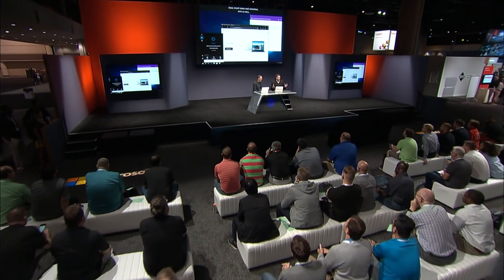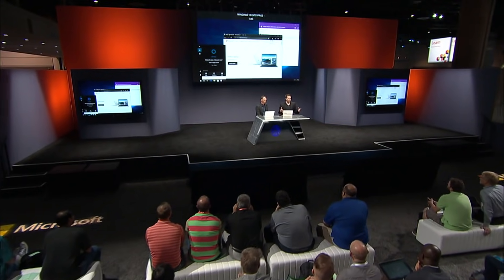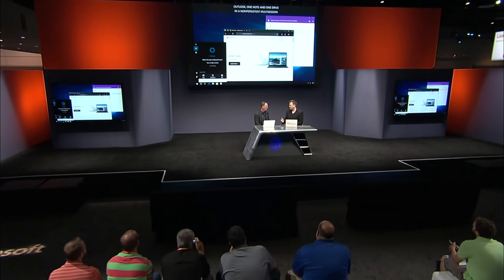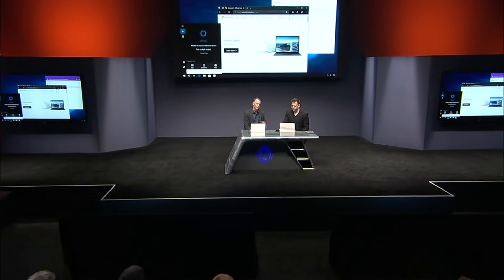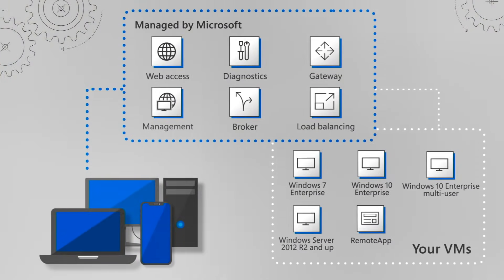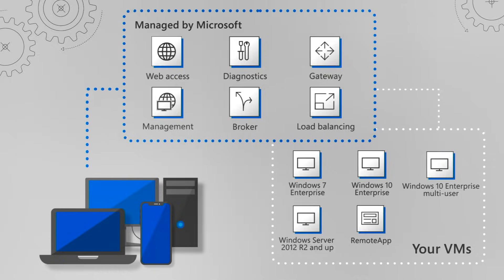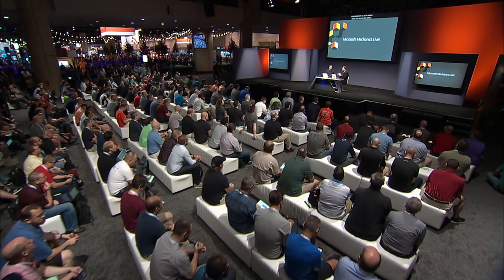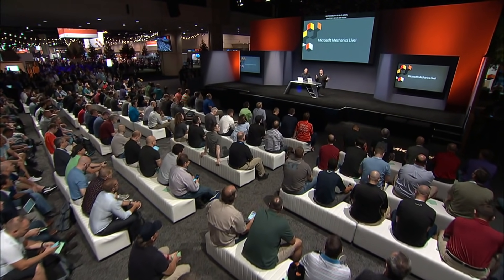From an IT admin perspective, Windows Virtual Desktop reduces overhead by providing remote desktop infrastructure roles — gateway, broker, diagnostics, and RD web — all as a complete managed service on Azure. It's designed with simplicity and security in mind. Your virtual network stays secure because an outbound connection is established from your environment to the service in Azure. You remain in control of your Windows images, applications, and host pools using existing tools like SCCM and Intune.